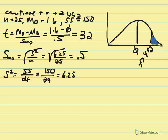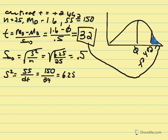We determine the likelihood of obtaining that t value — whether it's greater or less than alpha — based on where it resides relative to the null and the critical t value. We find that 3.2 is to the right of our critical t and falls into our critical region, so we reject the null.